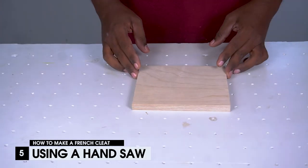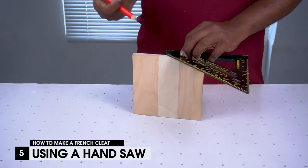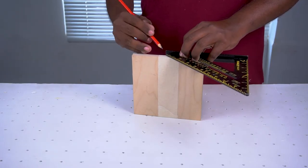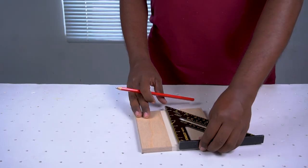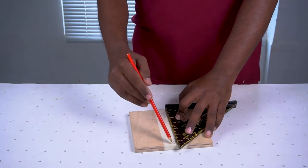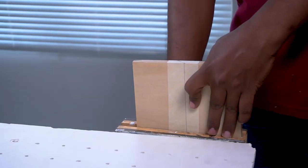The fifth and final method is by using a handsaw. Using a speed square and a pencil, draw a 45 degree angle mark on the wood's edge at your desired length. Once both edges are marked, join them so that you have a straight line for reference while cutting.